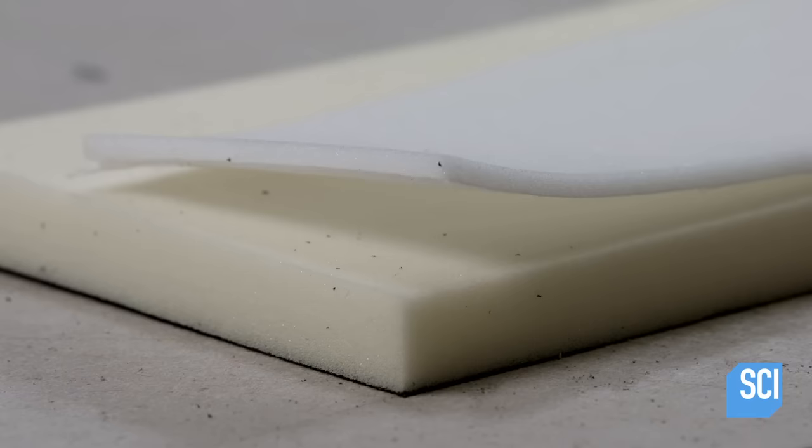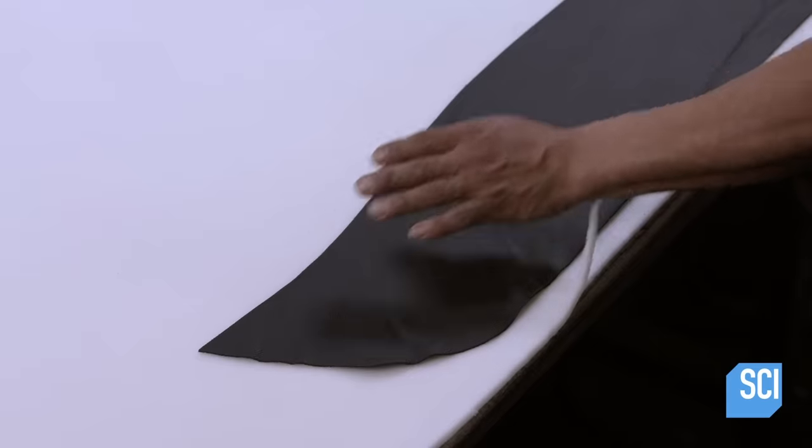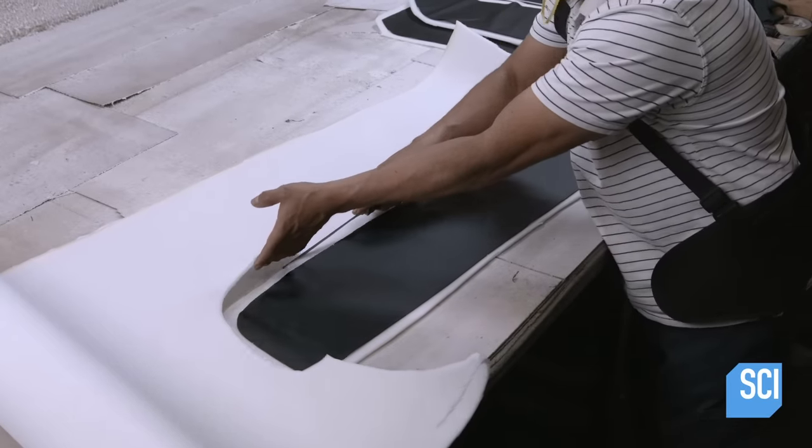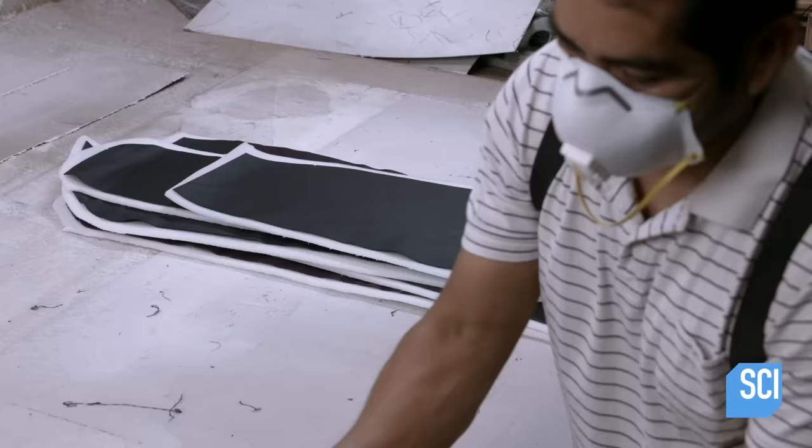Once all the leather pattern pieces have been accumulated, another worker cuts foam cushioning for backing. The density of the foam in the chair varies. He uses more rigid foam for the chair's contoured cushioning so it will hold its shape.